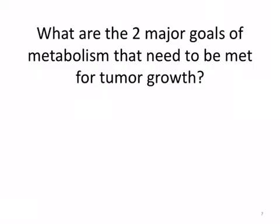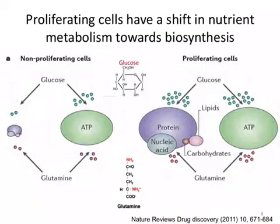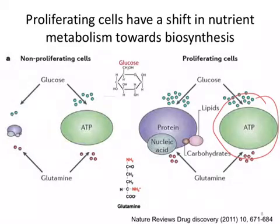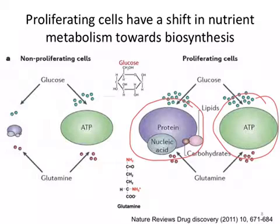What are the two major goals in metabolism that need to be met for tumor growth? Proliferating cells need lots of ATP — lots of energy to grow and proliferate — but they also need biomass: the proteins, the nucleic acids, the lipids. Think about all the membranes that need to be synthesized, all those phospholipids, and a small amount of carbohydrates for structural purposes.